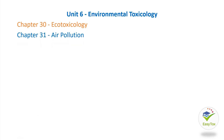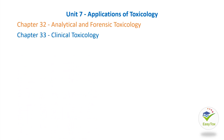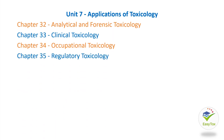Unit 7, Applications of Toxicology, contains 4 chapters: Chapter 32, Analytical and Forensic Toxicology; Chapter 33, Clinical Toxicology; Chapter 34, Occupational Toxicology; Chapter 35, Regulatory Toxicology. Please stay tuned for the next module for a chapter-wise overview.